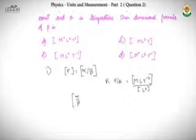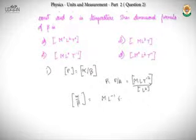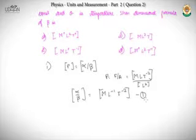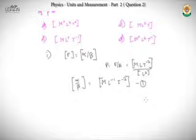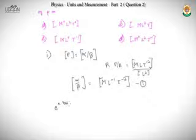The second relation: whatever appears in the exponent of e must be dimensionless, because we cannot raise e to a dimensional quantity. So αz/kθ must be dimensionless — equal to M⁰L⁰T⁰K⁰.